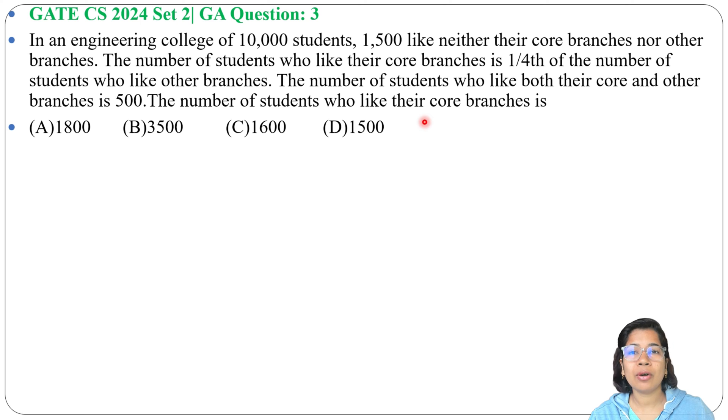While reading the question, I will also draw the Venn diagram so you can easily understand the numbers. In an engineering college of 10,000 students, 1,500 like neither their core branches nor other branches. So total number of students is 10,000, the universal set U will be 10,000, and from that 1,500 doesn't like neither core branches nor the other branches.